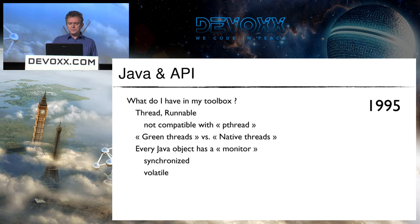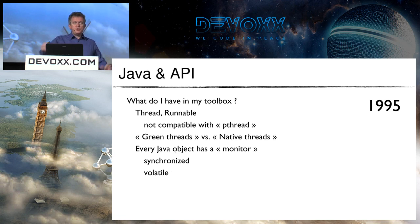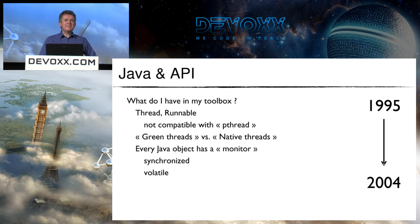What do I have in my toolbox in 1995 to program a concurrent application? Not many things: the Thread class and the Runnable interface. These are not compatible with P-threads, a standard in C and C++, because Thread and Runnable were written before P-threads existed. I have the difference between green threads and native threads, and every Java object has what is called a monitor, leading to the important notions of synchronized and volatile. And it will stay like this until 2004 — nearly 10 years, which is so long in computer science.